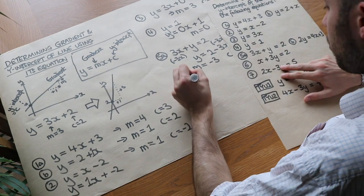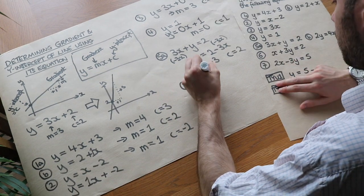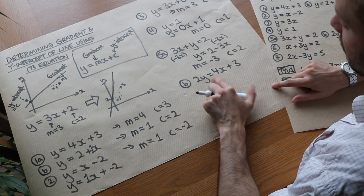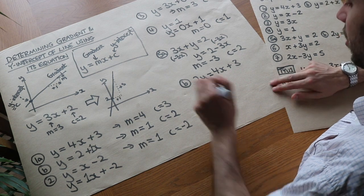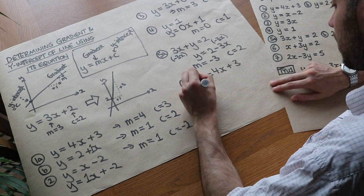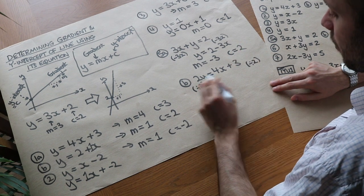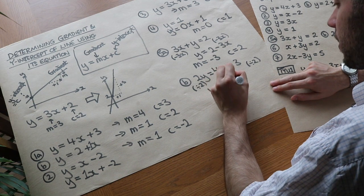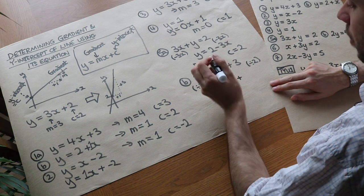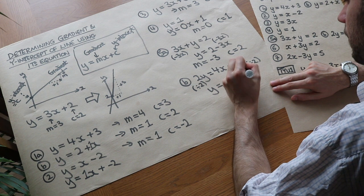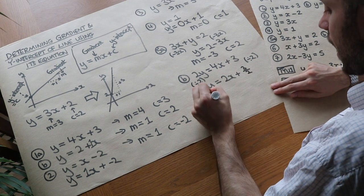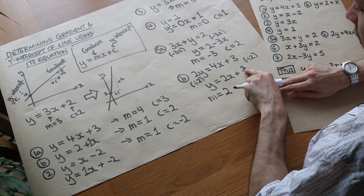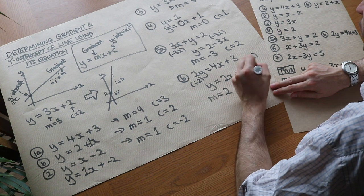Let's do 5b: we've got 2y is equal to 4x plus 3. Now y is not the subject — it's almost the subject, but y has been multiplied by 2. So we divide both sides by 2, which gives y equals 2x plus 3 over 2. Then m is the number in front of the x, which is 2. And the y-intercept c is 3 over 2, or 1.5.